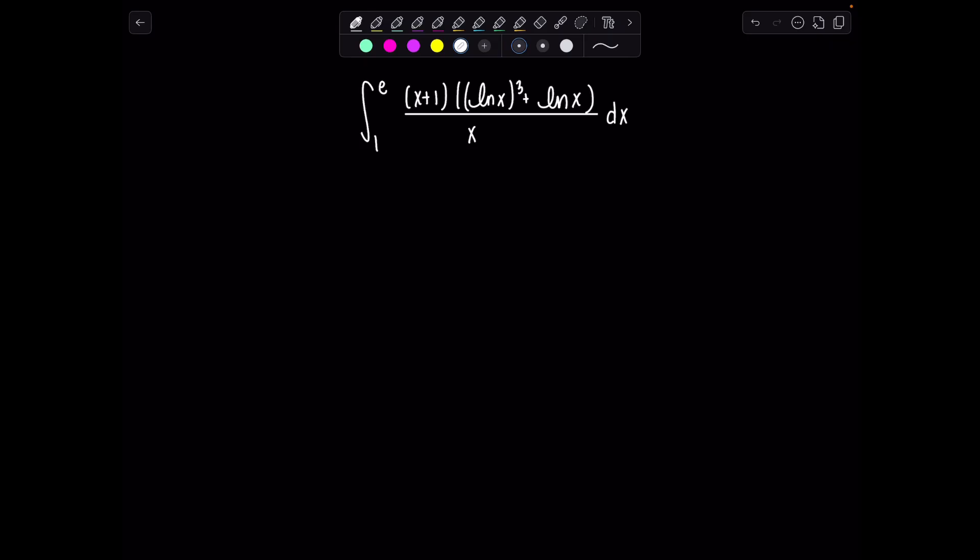We have the definite integral from 1 to E of (x+1) times the quantity (natural log of x)³ plus natural log of x, all over x dx. So go ahead, solve this on your own, pause the video, give it a try.